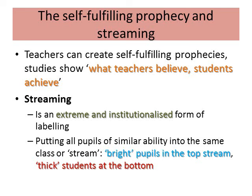Streaming involves putting all pupils of similar ability into the same class or stream. Bright or clever pupils will be in the top streams, whereas less clever pupils may be placed in the bottom streams. Often in secondary schools, students sit a set of exams or tests in Year 7 and streams are decided based on those results. Sometimes students move up and down the streams over five years, but many stay in the stream they are placed in from Year 7. Other schools might use SATs results in order to stream.